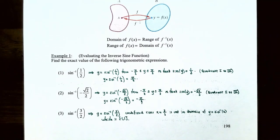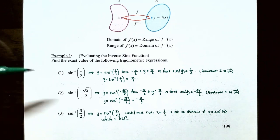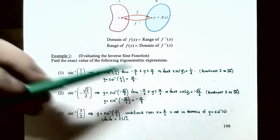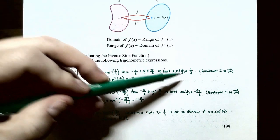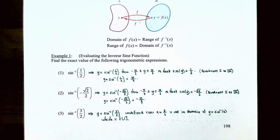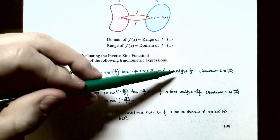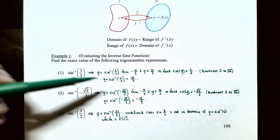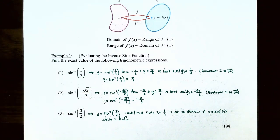Example one: evaluating the inverse sine function. Find the exact value of the following. Number one: sin⁻¹(1/2). Let y = sin⁻¹(1/2). We need y in [−π/2, π/2] where sin(y) = 1/2. The sine function is positive in quadrant 1, so y = π/6, since sin(π/6) = 1/2. Number two: sin⁻¹(−√2/2). Let y = sin⁻¹(−√2/2). The value is negative, so we must be in quadrant 4, giving y = −π/4, since sin(−π/4) = −√2/2.